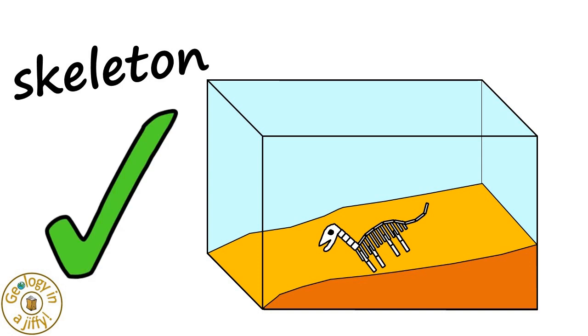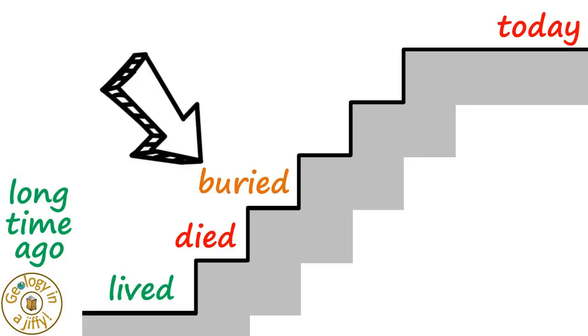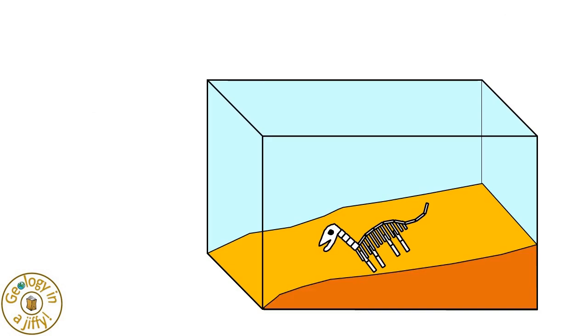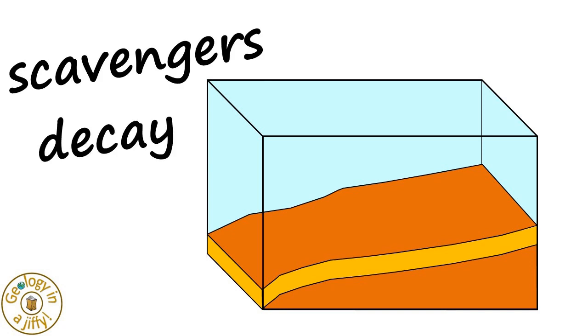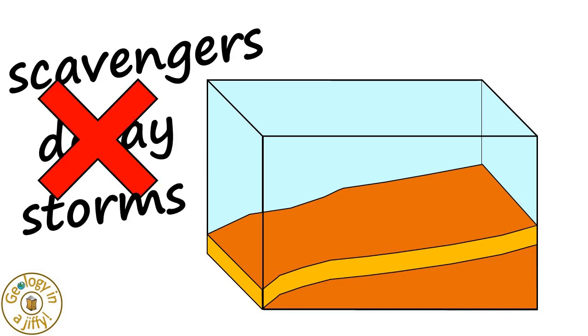So what we do want is for our skeleton to be buried, the third step of fossilisation. Our skeleton could be buried by a rockfall or mudslide, stopping scavengers, decay, or storms from destroying our skeleton.